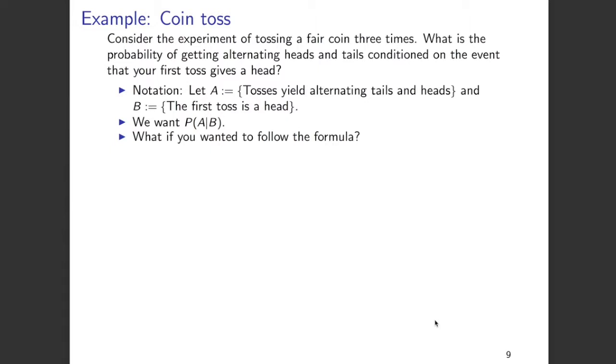What is this event A? Event A is tosses yielding alternating tails and heads. Event B, on which we will condition, is that the first toss is a head. We want to find the probability of A given B.